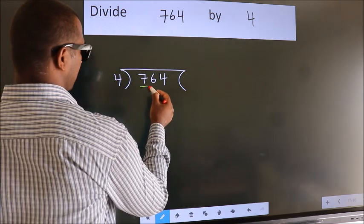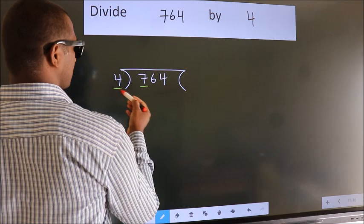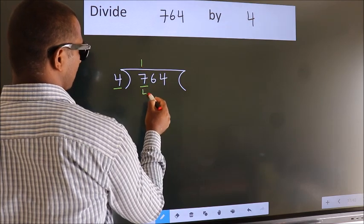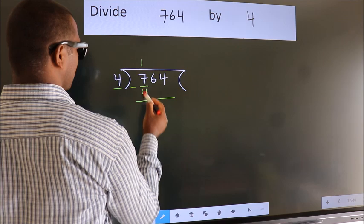Here we have 7, here 4. A number close to 7 in 4 table is 4 once 4. Now we should subtract. We get 3.